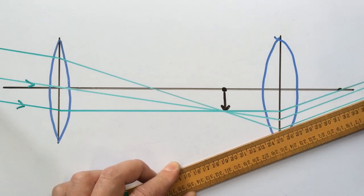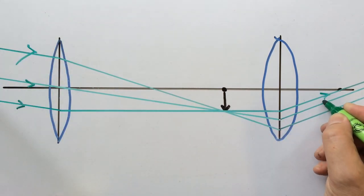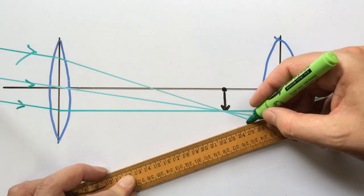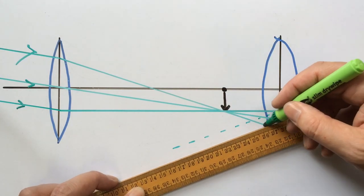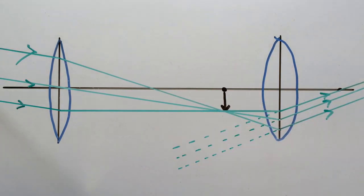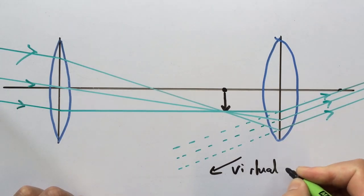The final step in the diagram is just to show where the image is located and we can do that by taking each of these rays and just tracing back their apparent path using dotted lines. And that is our completed ray diagram.